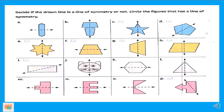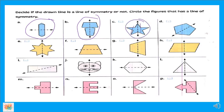أول واحدة: letter A — line of symmetry ولا لأ؟ آيوه يا ماستر، line of symmetry! لأن the part up is the same as the part down. طيب letter B — لابجورة الجميلة دي — line of symmetry ولا لأ؟ It's line of symmetry. فعلاً. طيب letter C — الستارز دي — يا ترى الـ line المرسوم هو line of symmetry ولا لأ؟ آيوه! كل اللي موجود في الـ right هو نفس الموجود على الـ left، ودي كمان line of symmetry.